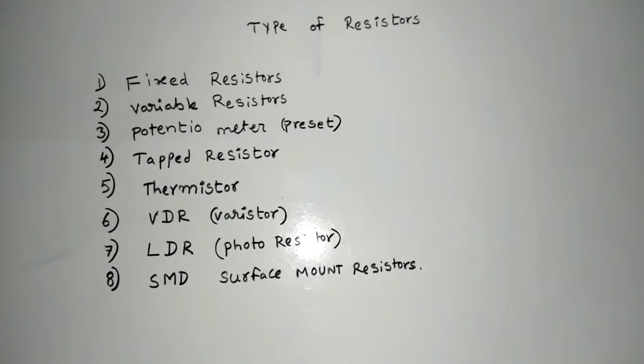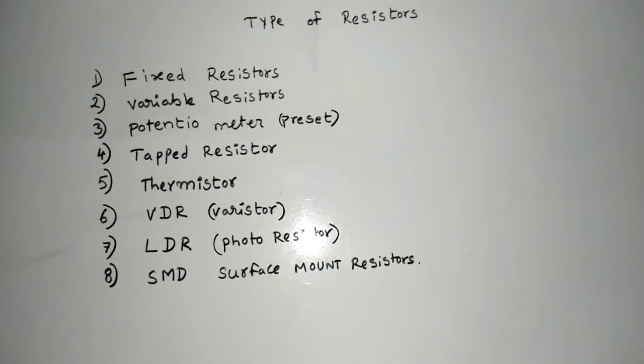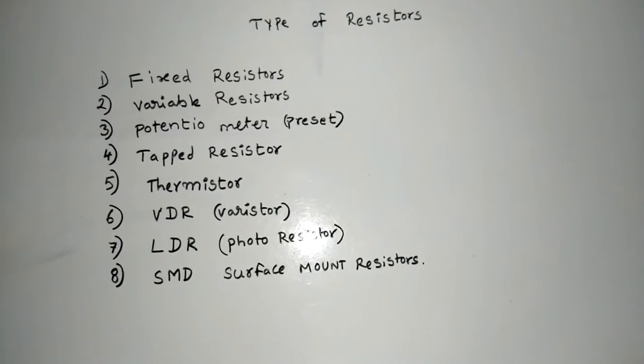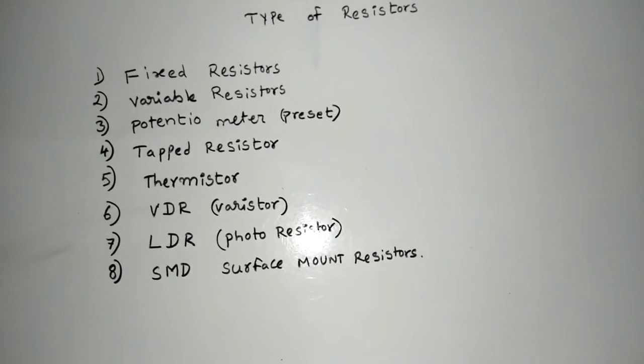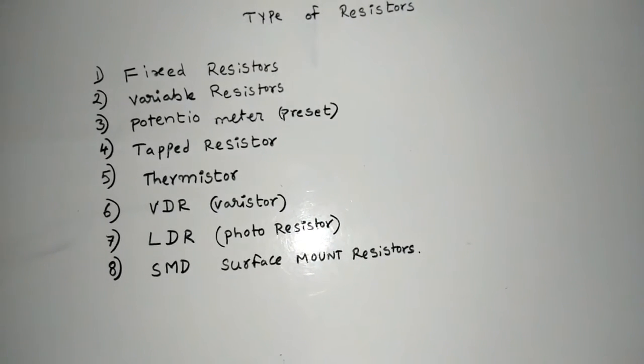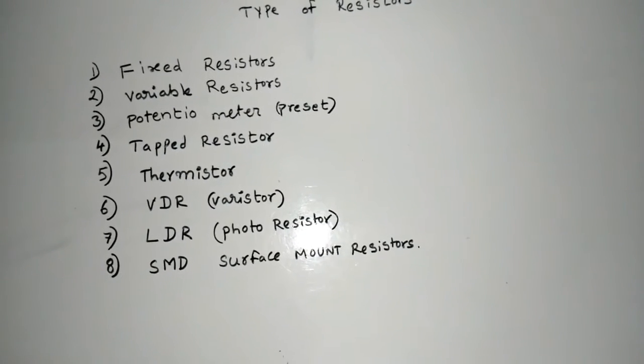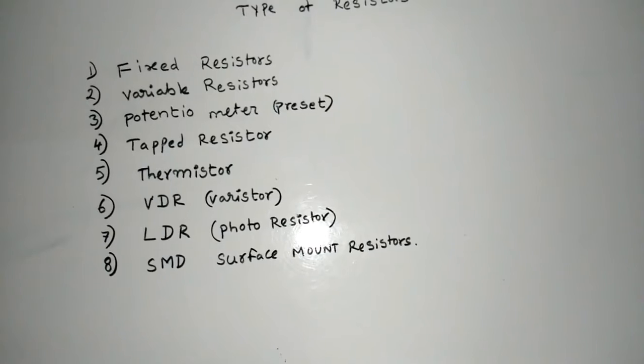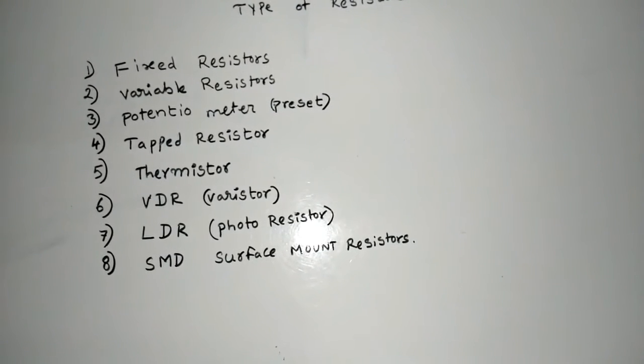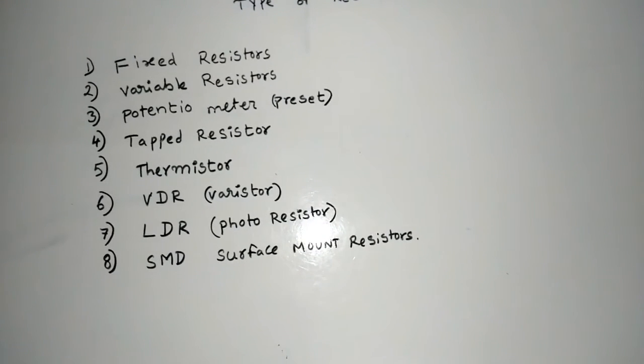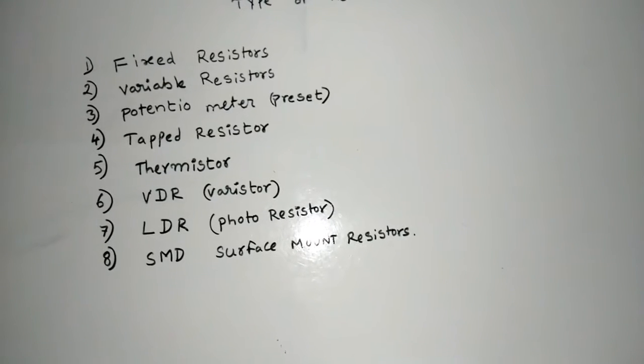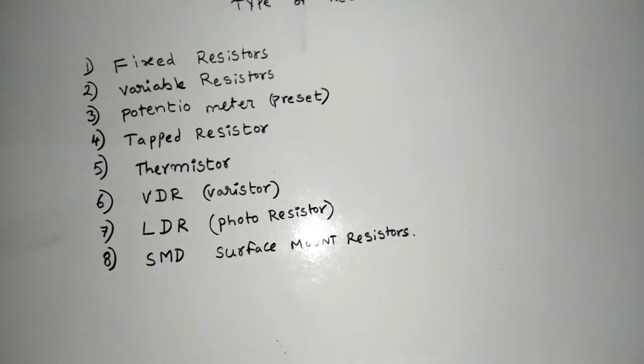Types of Resistors: Fixed Resistors, Variable Resistors, Potentiometer, Preset Resistors, Tapped Resistors, Thermistor Resistors, VDR, Varistor, LDR, Photo Resistor, SMD, Surface Mount Resistors.